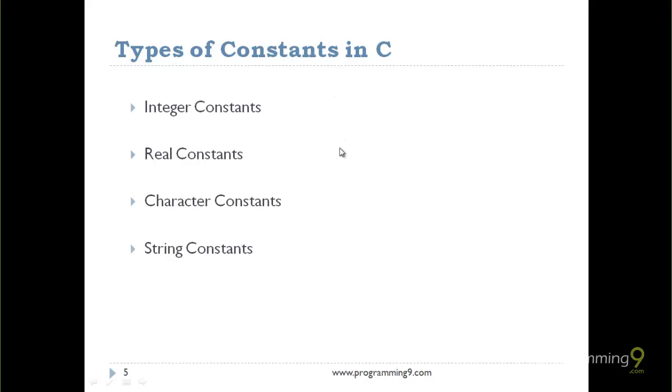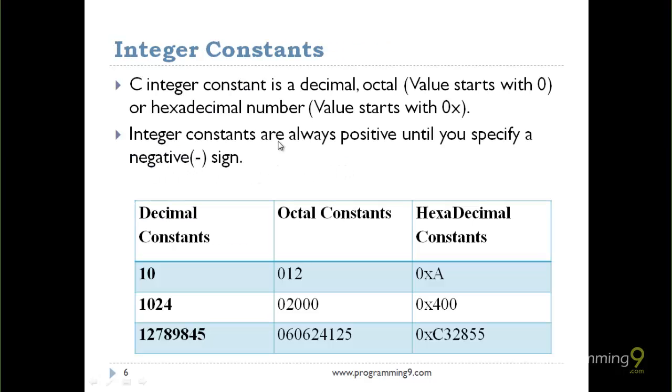The different types of constants in C are: integer constant, real constant, character constant, and string constants. We already know the different data types called integer, real, character, and string. Here the real might be float or double.